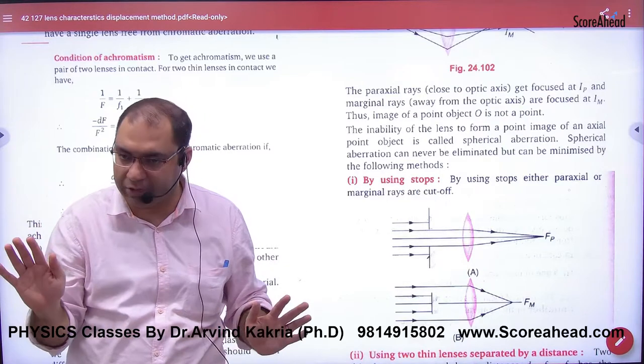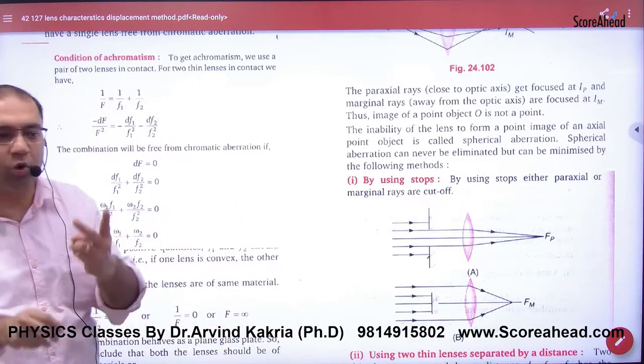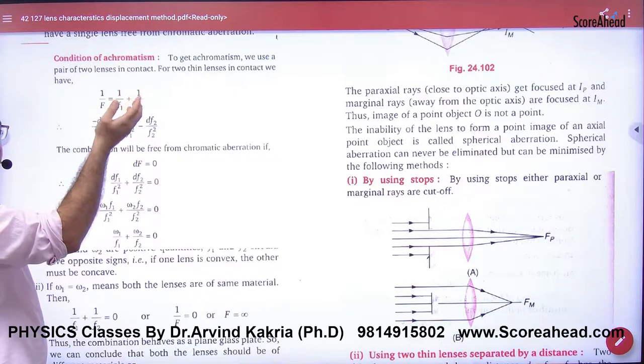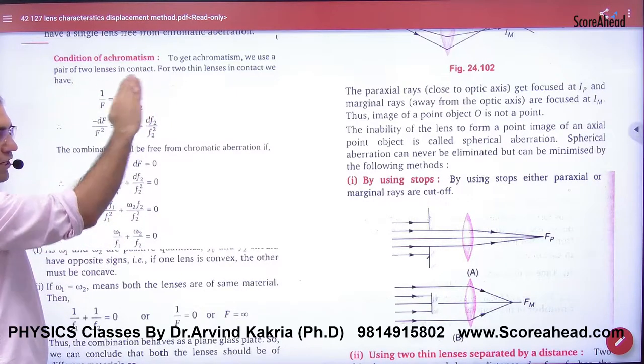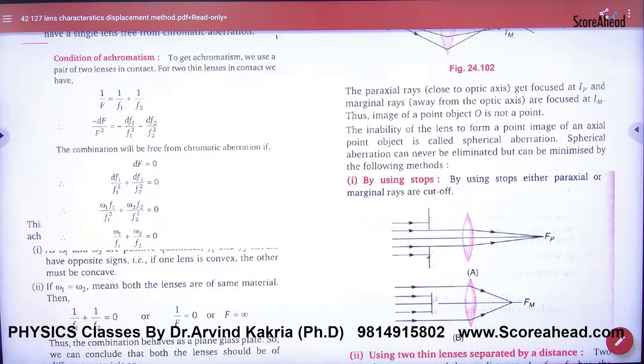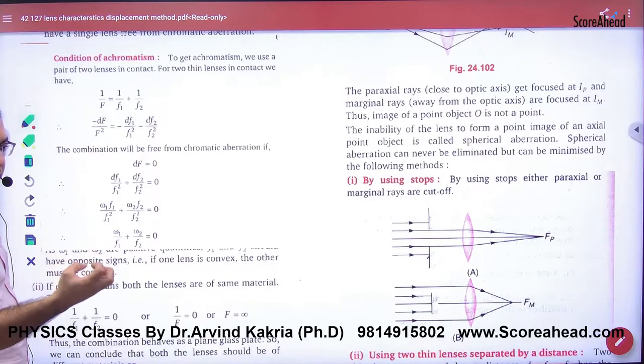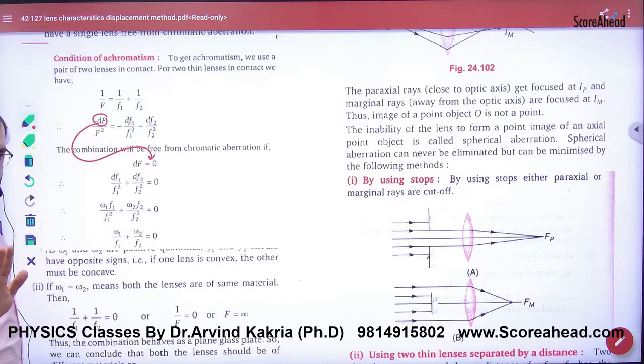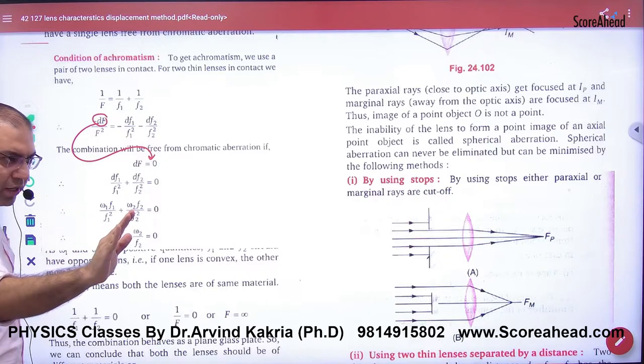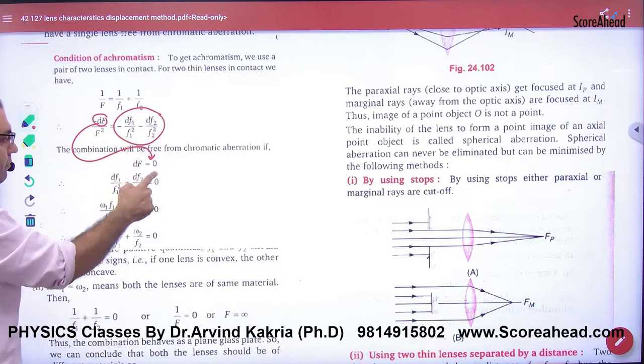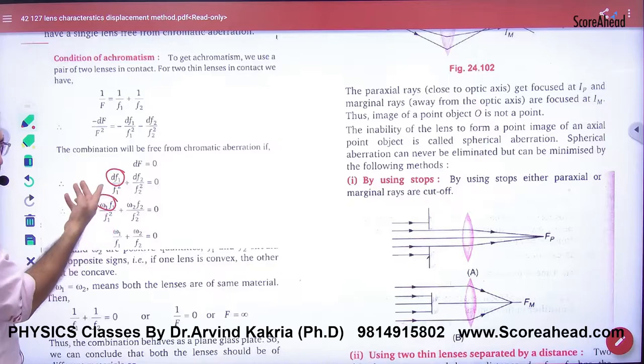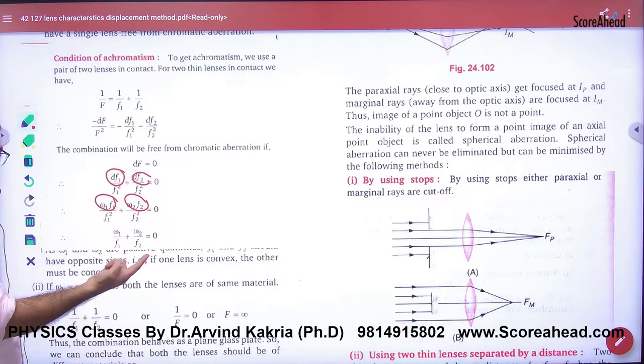For this, we use a combination of two lenses. Equivalent focal length is 1/f₁ + 1/f₂. You differentiate this, and the result will show no focal length difference. So df equals 0.